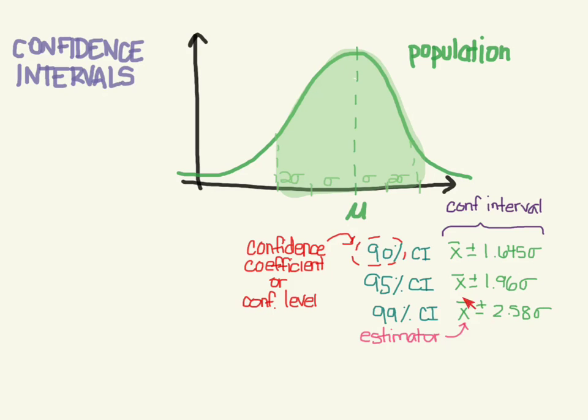X bar in this case is our estimator. And this number that we get from the Z table, that's called our reliability factor. And then this term is called our precision. It's also called the margin of error.